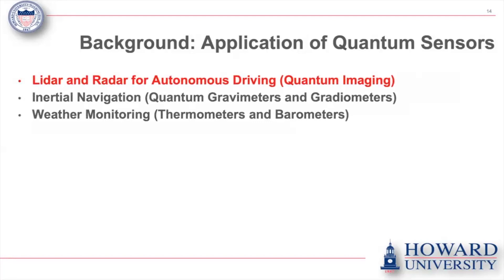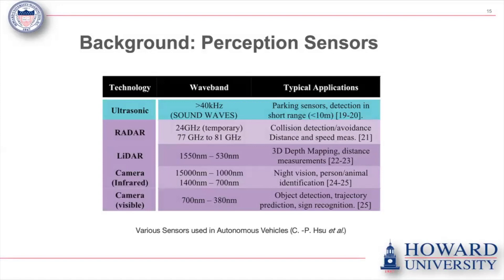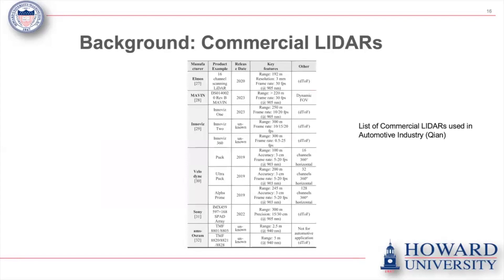To understand the perception sensors in the realm of vehicles, including autonomous vehicles, you have ultrasound, radar, LiDAR, infrared camera, and visible camera. The one we're going to focus on is LiDAR, because LiDAR has the ability to do 3D depth mapping and distance measuring, and it is based around light — Light Detection and Ranging. There is a list of commercial LiDARs already used in the automotive industry.